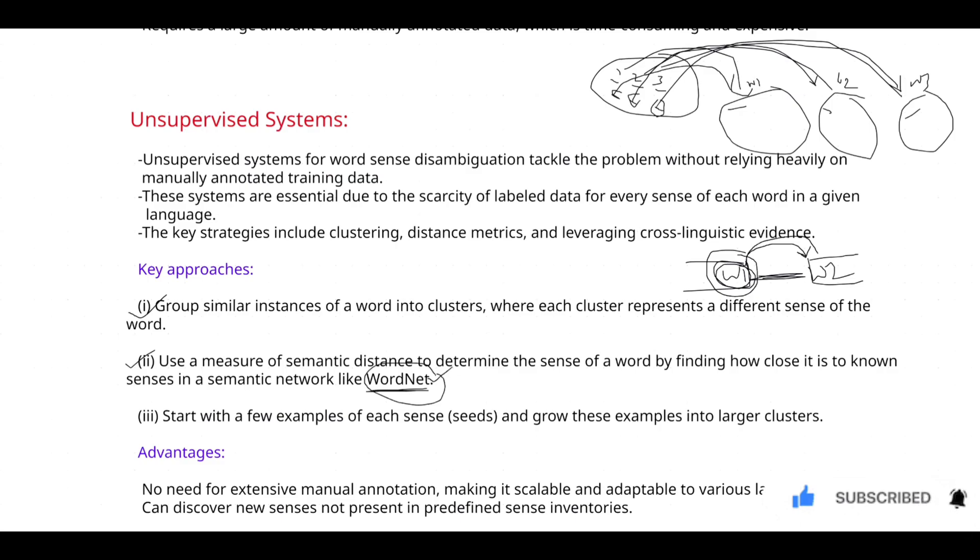And the third approach is start with a few examples of word senses and grow these examples into larger clusters. So here you can see you just considered only a few words and you have formed three clusters from it. And here also you just considered only two words and you are measuring the distance between those words. The third approach is saying you add some more words to this particular bag and you align those words to the corresponding clusters. And the same thing goes with it - you add another word, that is word three, and find out the distance between these words. These are the key approaches.